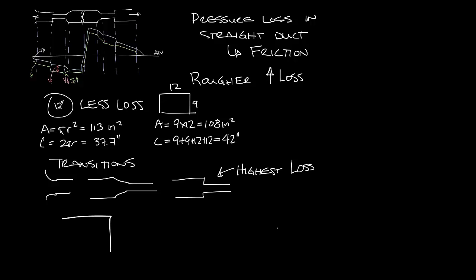Bends in the ductwork will affect pressure drop as well. The harder the bend, the higher the pressure loss. That's why you often see turning vanes in 90 degree bends. They guide the airflow around the corner, reduce the turbulence, which reduces the pressure loss.